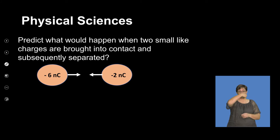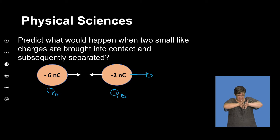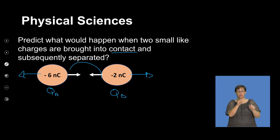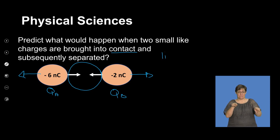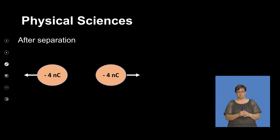Here we've got a different scenario: like charges. Let's call this one QA — negative 6 nanocoulombs — and this one QB. These two are like charges, so the forces are away from each other — they are repelling. The white arrows indicate they must be brought into contact. But before contact, they tend to repel each other because they are like charges. After separation, this is what happens.